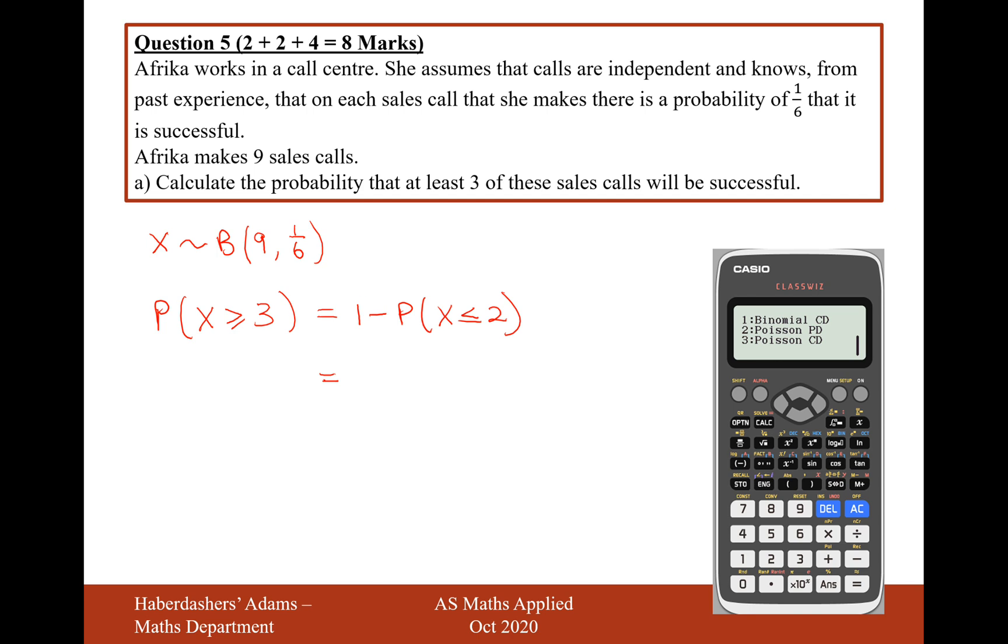So go into that probability binomial CD mode and type into the variable mode and type in your key pieces of data, which is 2 successes or less, out of 9, where the probability of each success is 1 divided by 6. And you can type a little calculation into that probability section there, absolutely fine. And work it out so that it's going to be 1 minus 0.8217. Now what I do to get a very accurate answer here is store this value as A. So press the store button and then straight away the A button. That will store it as your value for A. And then in the normal calculator mode, do 1 minus A, and that will give you 0.178. So there we are. It's about 17.8% chance that she'll have three successful calls or more.